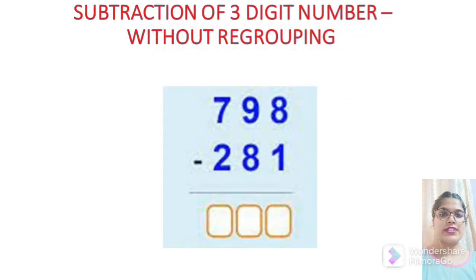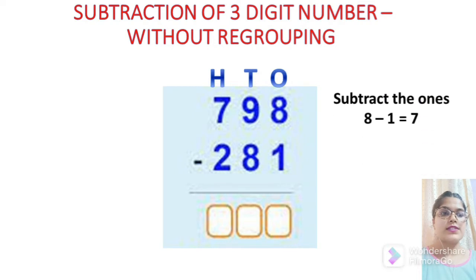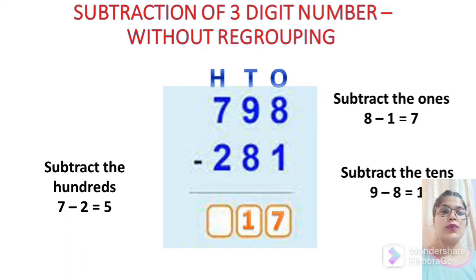Subtraction of three digit number without regrouping. Again, we will go according to the heading ones, tens and hundreds. Ones, 8 minus 1 is equal to 7. Let's subtract the tens now. 9 minus 8 is equal to 1. 7 minus 2 equals 5.